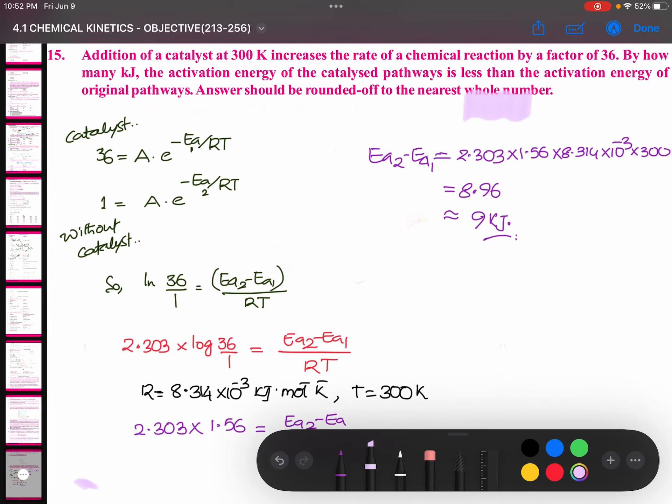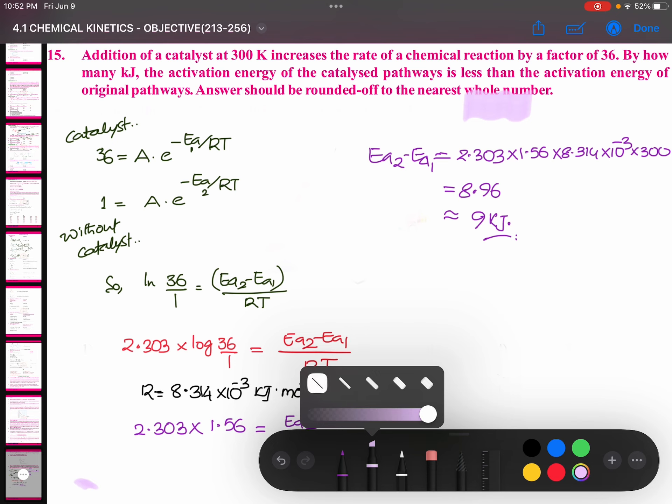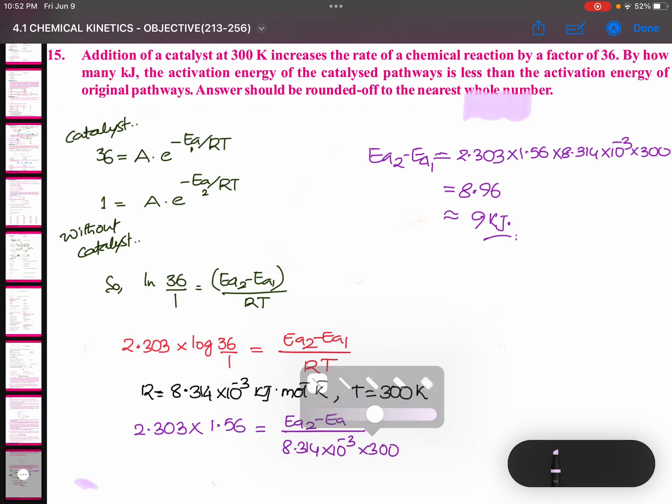Okay, shall we see this question? K equals A times e to the power of minus Ea by RT. This formula is known to you.